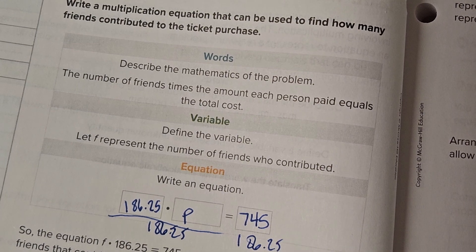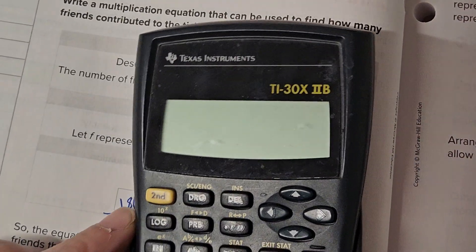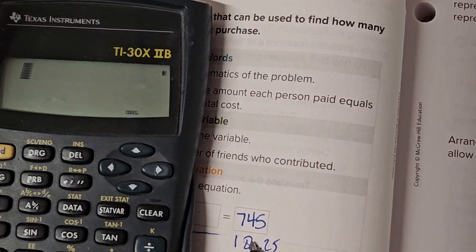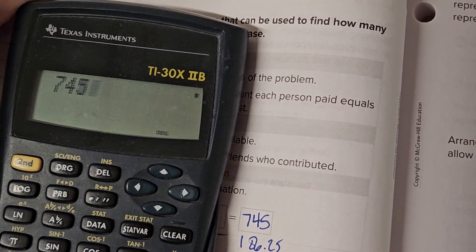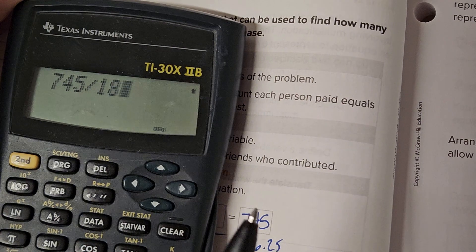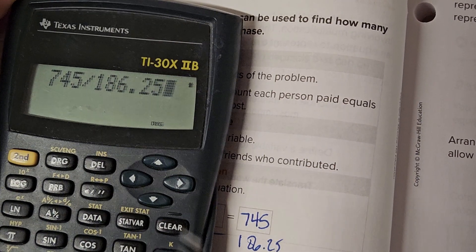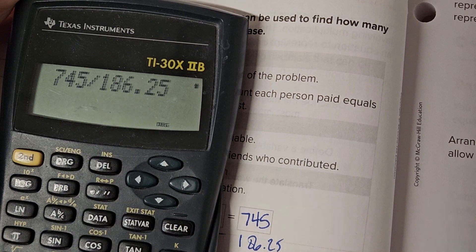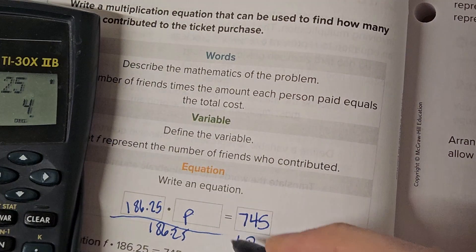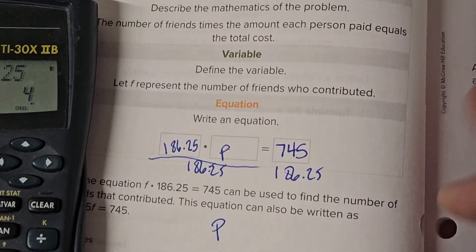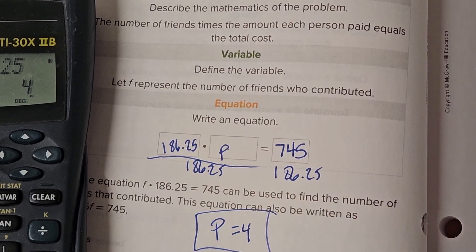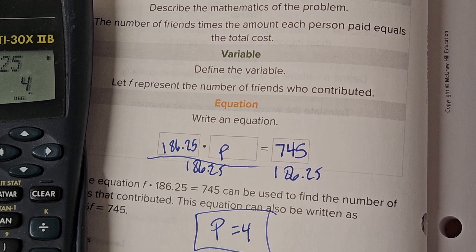They do not give us a lot of room to work here. 186.25, and to speed this up, we'll grab our trusted calculator, and it says 745, 745, divide, 186.25. Sometimes it's good to check your screen. Make sure you wrote it the same way you meant to. Equals 4. P equals 4. So how many people total? Four people. Vincent and three friends.